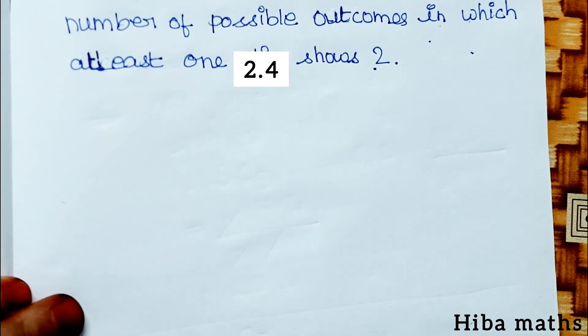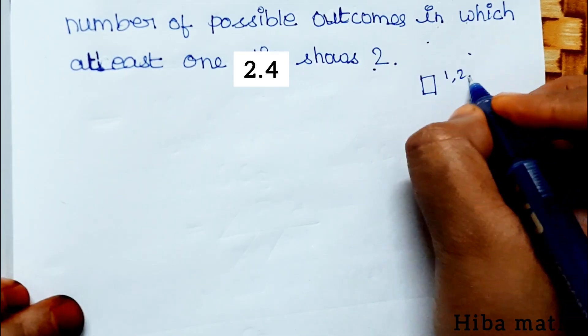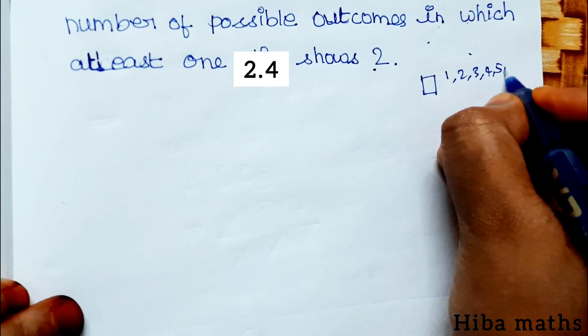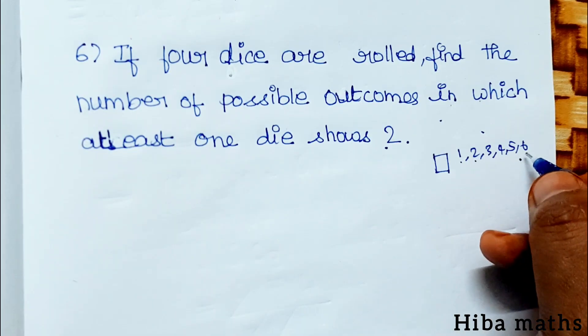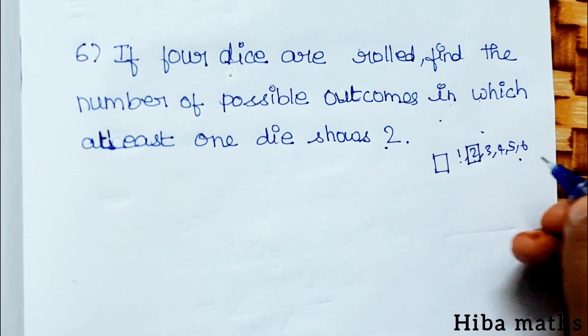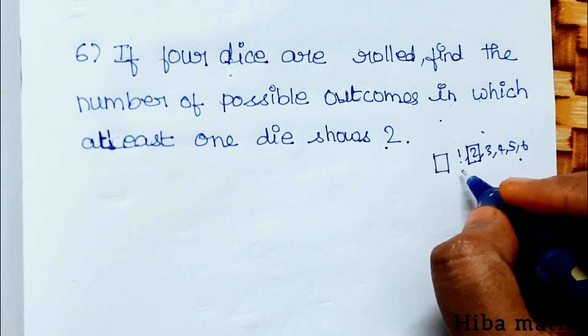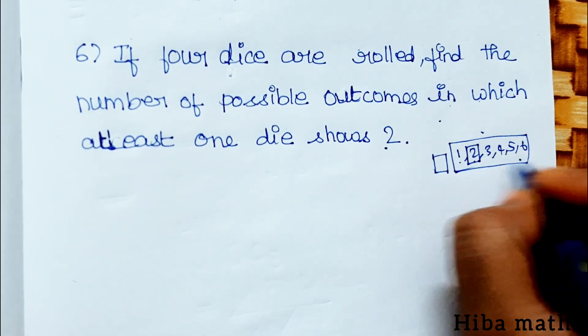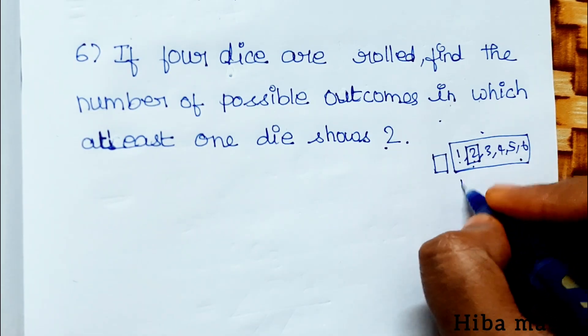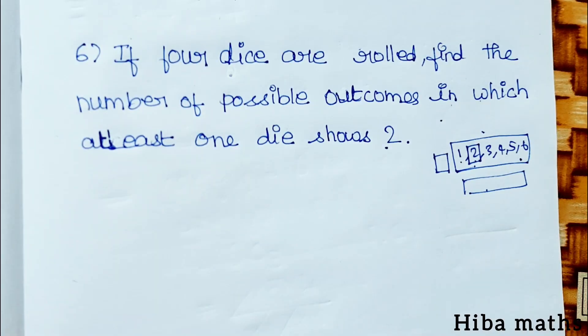So if you have 4 dice, each die has 6 outcomes. Total outcomes is 6 to the power 4. But we need at least one die showing 2, so we'll use complementary counting and subtract.